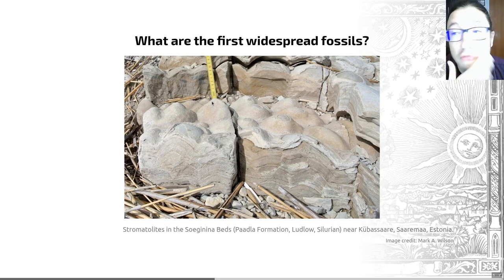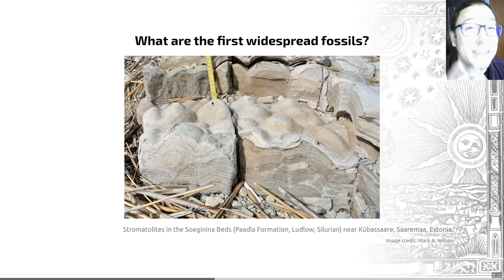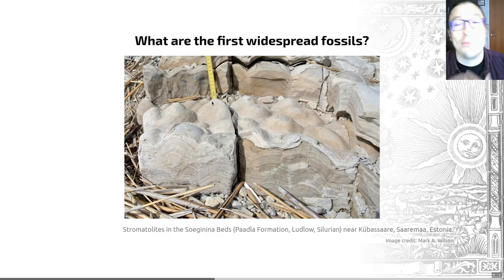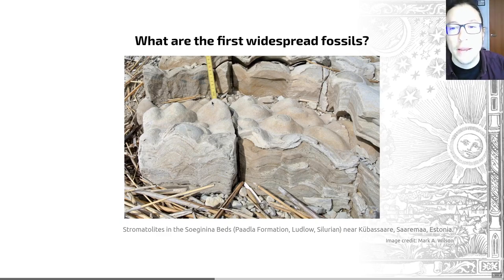Some recent papers have suggested that these structures — stromatolites — appear very, very early, with some suggested to exist at 3.7 billion years ago. But my sense is that it's very hard to prove unequivocally, or even make a case that it's more likely than not, that the earliest stromatolites are of biological origin. There are a few different ways this kind of structure could have built up that doesn't necessarily rely on bacteria.